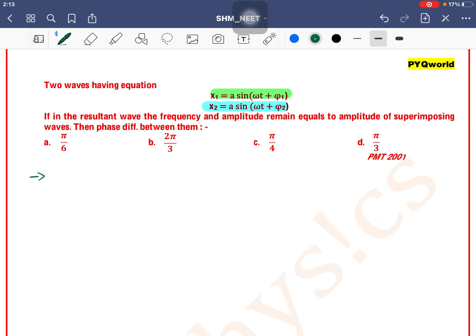So we see what we have given, that the resultant wave amplitude remains the same. So we use the resultant wave amplitude formula: R = √(A1² + A2² + 2A1A2 cos φ)